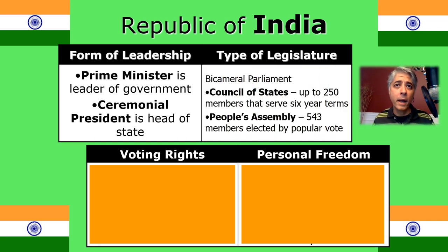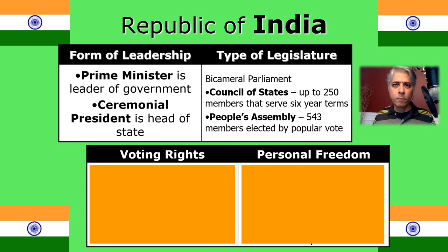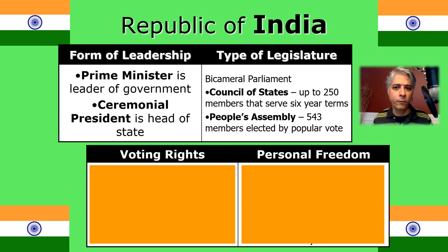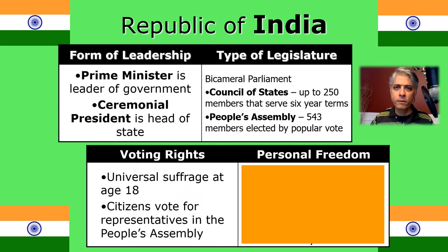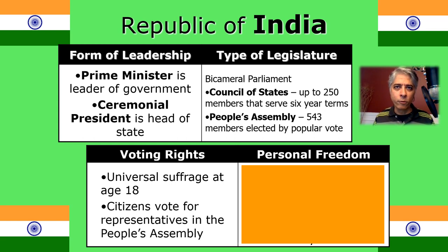Their parliament is bicameral — two houses. There's a council of states, somewhat analogous to our Senate, with members appointed by state serving six-year terms. And there's the people's assembly, analogous to our House of Representatives, in which members are elected by population. For voting rights, it's standard for any democracy — universal suffrage at age 18. Because they're parliamentary, citizens vote for their representatives in the parliament, the people's assembly, not directly for the prime minister.